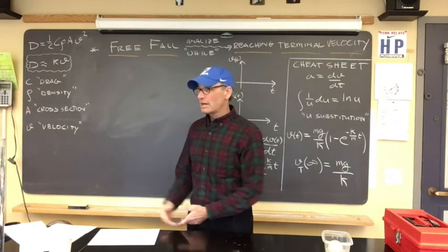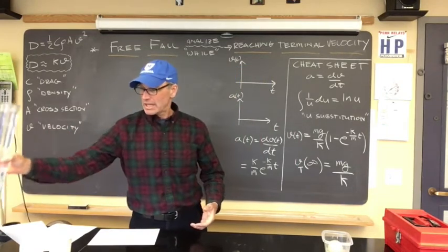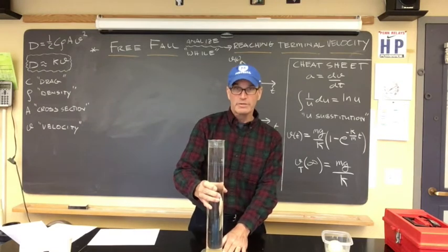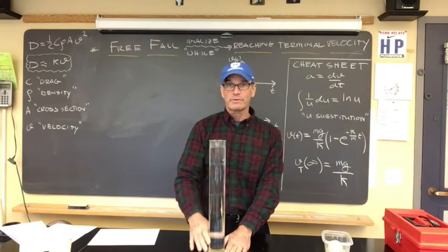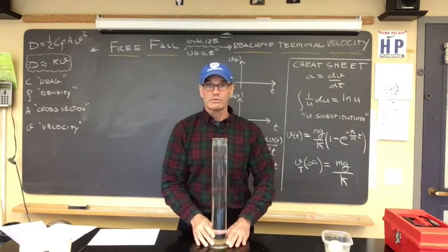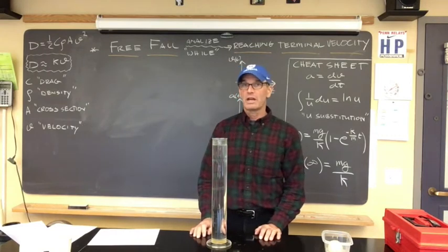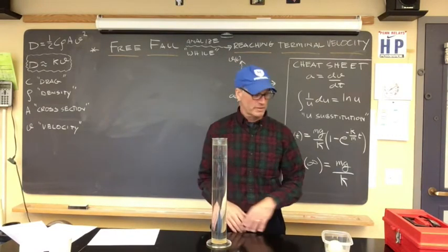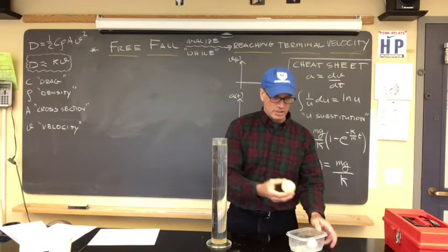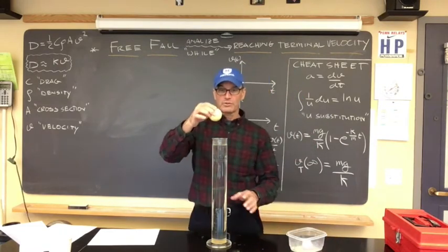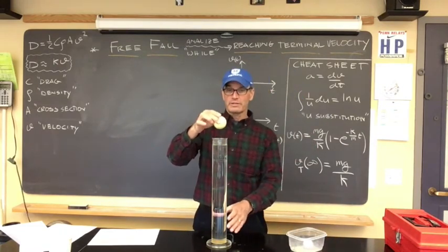Let's create a small locality for which we may be able to observe an object reaching terminal velocity. So let's take this cue ball and drop it into this cylinder.